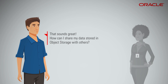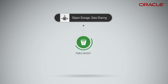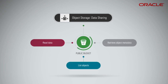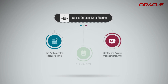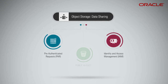You can make a bucket public to share data with others. Anyone with knowledge of the public bucket name and associated namespace can anonymously read data stored in a public bucket, list objects, or retrieve object metadata. If you do not wish to make a bucket public, you can use pre-authenticated requests or Identity and Access Management IAM policies to share data. These two options offer a more secure means of sharing data compared to public buckets.